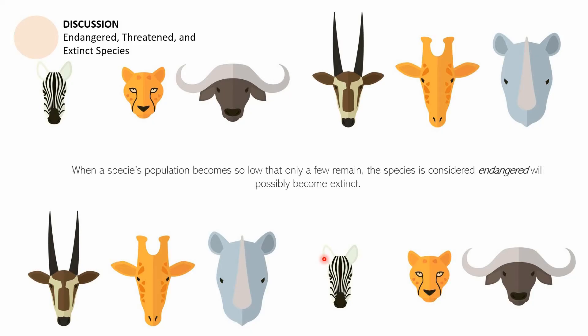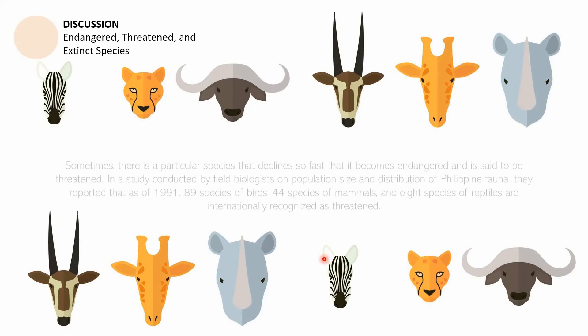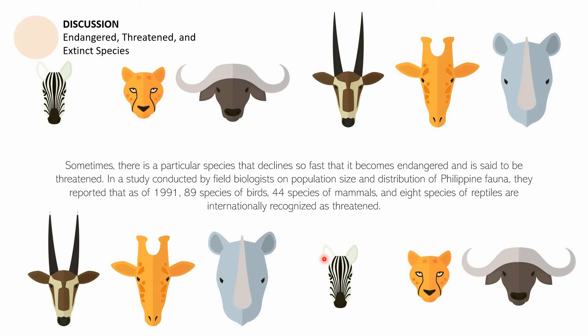The second part is a discussion about endangered, threatened, and extinct species. When a species' population becomes so low that only a few remain, the species is considered endangered and may possibly become extinct. Endangered species are not yet extinct, but they are heading in that direction. Extinct species — whether plants or animals — no longer exist anywhere in the world.